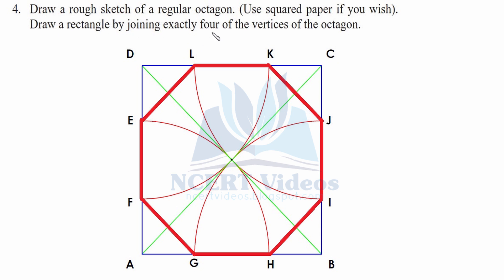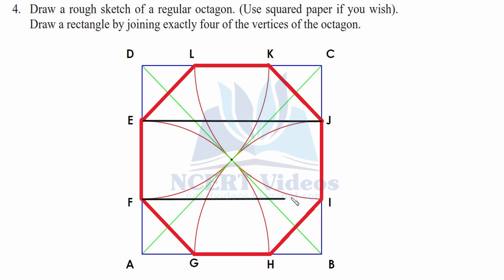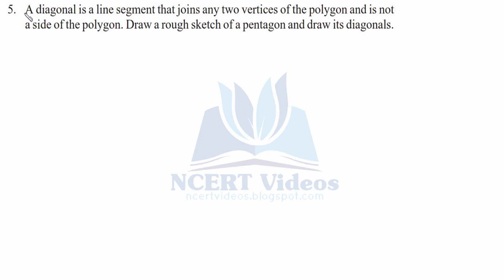Now draw a rectangle by joining exactly four vertices of the octagon. Taking vertices E, L, K, and J, connect E to J with a straight line segment; similarly connect F to I. In the center we get a rectangle, where opposite pairs of sides are equal — EF equals JI.